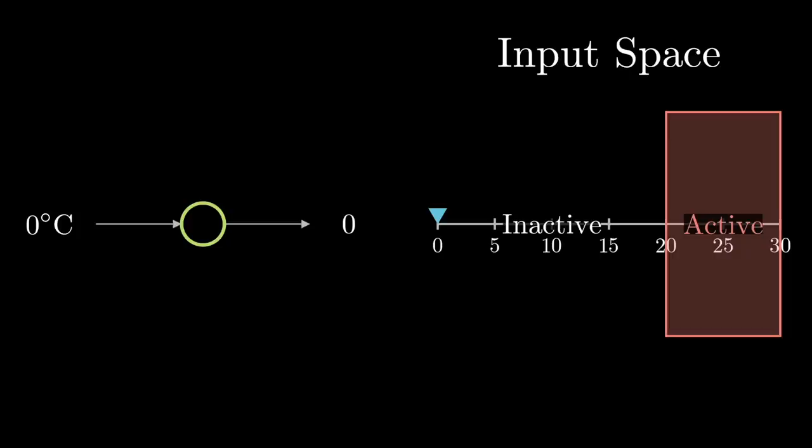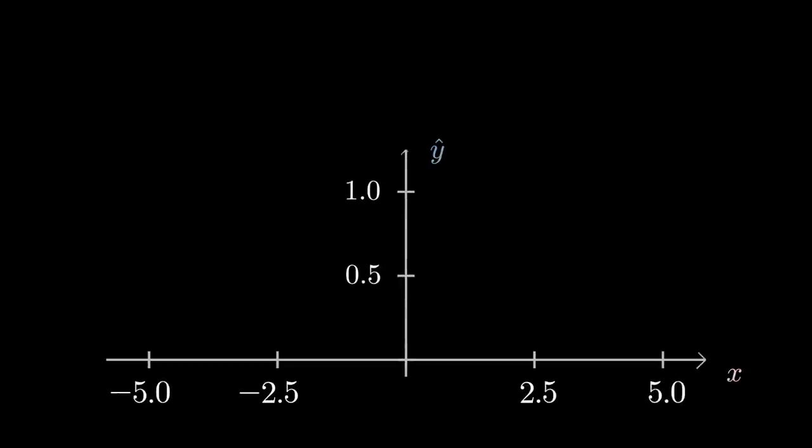Essentially, what we do when we train a neural network is to determine where these boundary lines go. Let's talk about how we do this mathematically. The output value y hat can be written as heavyside of x minus 20. The heavyside step function is quite simple. It just equals 1 when x is more than or equal to 0, and 0 if x is less than 0. That is, if x is positive, it's 1, and if x is negative, it's 0.